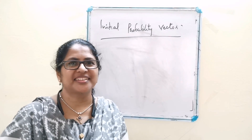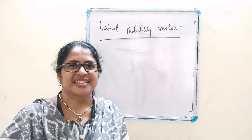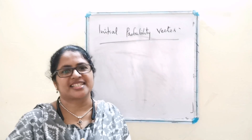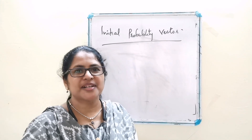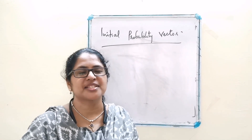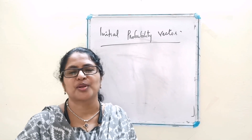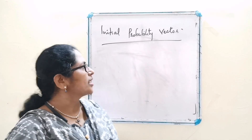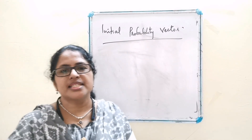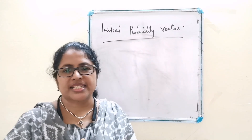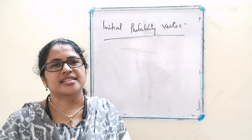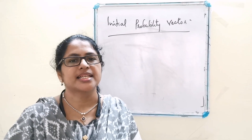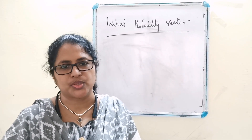Good morning to you all. Today let's study some definitions. First we have to consider the definition of initial probability vector. The initial probability vector defines the probability behavior of the system in the initial stage.